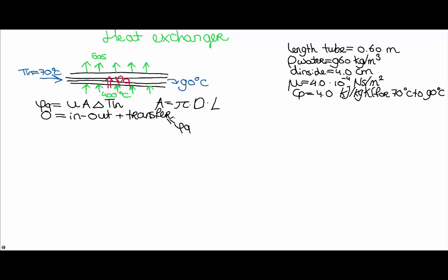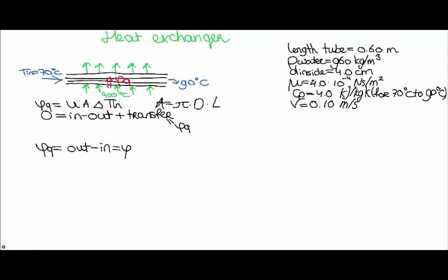So if we write this another way, we get Vq equals out minus in, which is the mass flow of the water times the heat capacity of the water times T out minus T in. If we fill in the equation for the heat transfer, we get: U times A times delta T ln equals the mass flow of the water times the heat capacity of the water times T out minus T in.